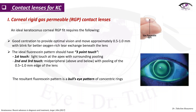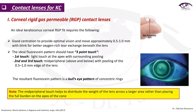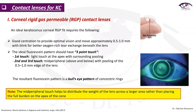The result of this fluorescein pattern is a bull's eye pattern of concentric rings. The mid-peripheral touch helps distribute the weight of the lens across a larger area rather than placing the full burden on the apex of the cone.